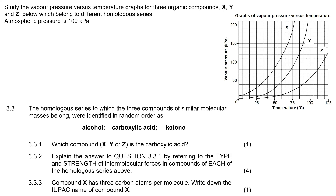The homologous series to which the three compounds belong, identified in random order, are alcohol, carboxylic acid, and ketone. Which compound is the carboxylic acid? We know all three boil when vapor pressure reaches 100. X boils at 55 degrees, Y would boil at around 80 degrees, and Z would boil at somewhere over 100 degrees.